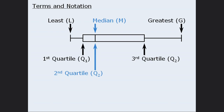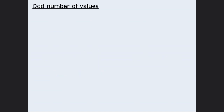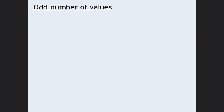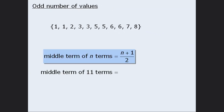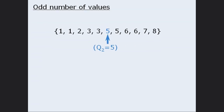Now that we've covered the notation, let's see how we handle an odd number of values. I should point out that not everyone agrees on one way to handle sets with an odd number of values. The method described here is based on the method that the test makers prefer. Let's draw a box plot that represents this set. Since the numbers are already arranged in ascending order, we'll first find the median. There are 11 numbers altogether, so when we use our formula, the middle value will be the 6th term. So the median, also known as the second quartile, is right here.